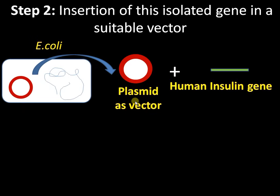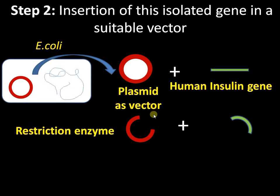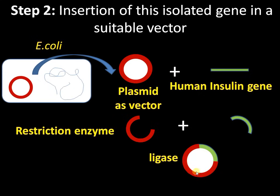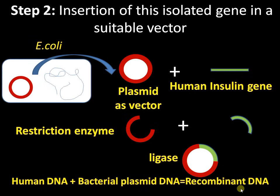This is our gene of interest — the human insulin gene. First, we need to make a cut in the vector using a restriction enzyme. Restriction enzymes are enzymes capable of making internal cuts at specific sites in a DNA molecule. I made a cut using a restriction enzyme, then incorporated the insulin gene into the vector, and sealed the cut ends using the enzyme ligase. Now we have the recombinant DNA molecule, also called chimeric DNA — a DNA molecule made from DNA from different sources. Here we have human DNA and bacterial plasmid DNA combined together.